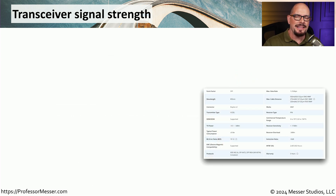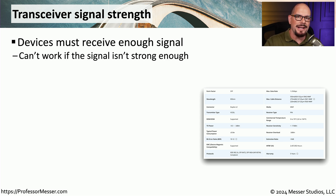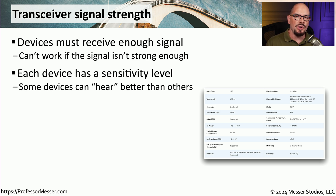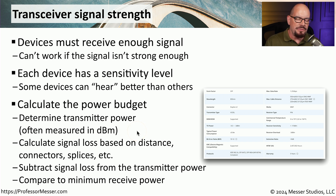One challenge when connecting transceivers and fiber connections is ensuring enough signal gets from one end of the connection to the other. This is especially important for long runs with many connections in the middle. Each device has a sensitivity level, indicating how much signal it can receive and still interpret everything properly. This is why it's important to calculate the exact power budget from one end to the other. We first determine how much power is being transmitted — usually measured in decibels per milliwatt — which gives the total decibels transmitted for one milliwatt of signal.